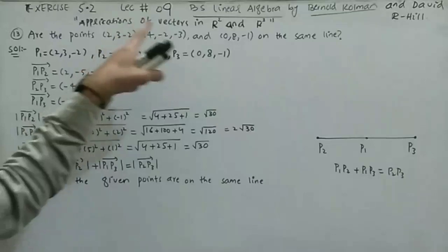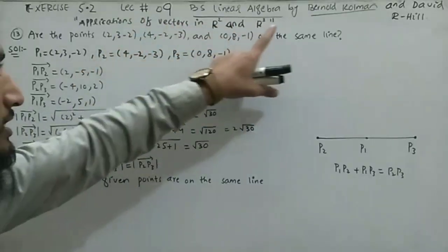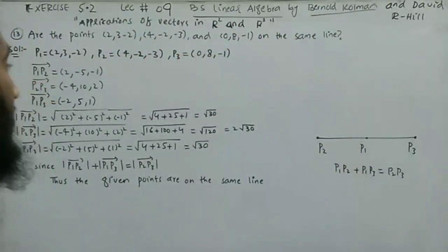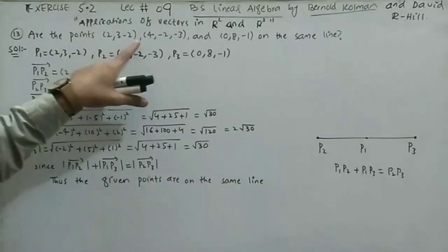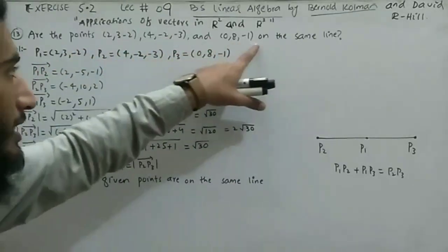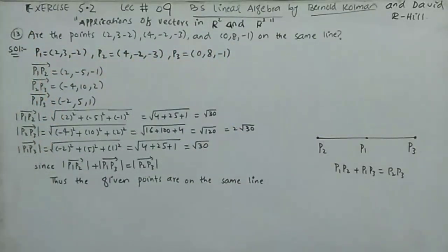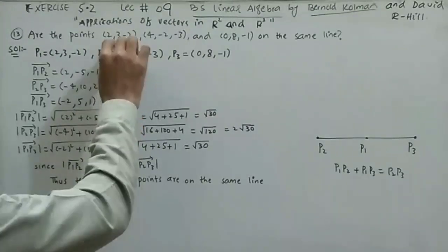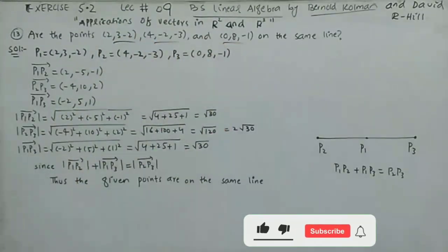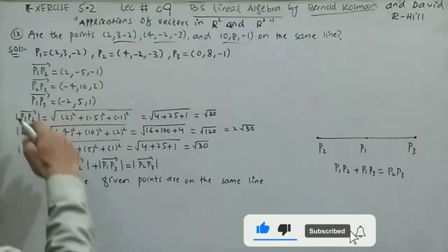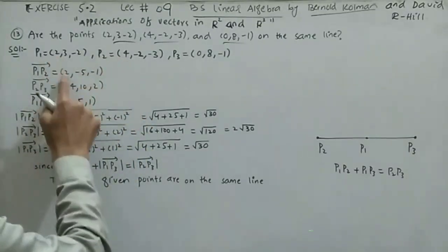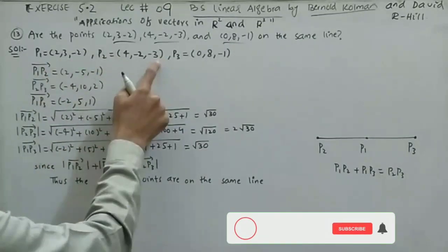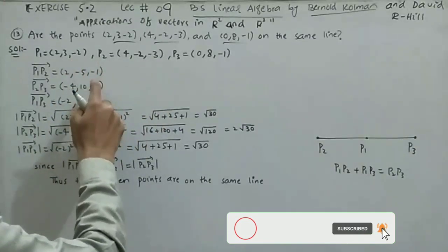Question 13 from Exercise 5.2, Lecture 9, BS Linear Algebra by Bernstein, Corman and David Hill, 8th edition. The question asks: are the points (2, 3, -2), (4, -2, -3) and (0, 8, -1) on the same line? Let's label these P1, P2, and P3. The position vector P1P2 is final minus initial: (4-2, -2-3, -3+2) = (2, -5, 1).